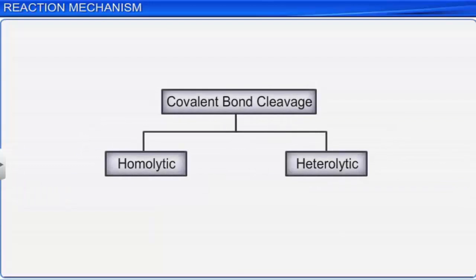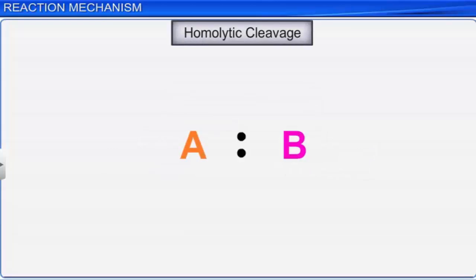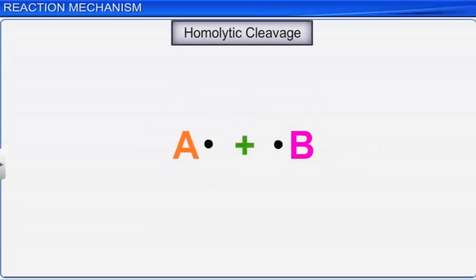A covalent bond can get cleaved either by homolytic cleavage or by heterolytic cleavage. In homolytic cleavage, a bond breaks equally in such a way that each atom gets one electron of the shared pair.